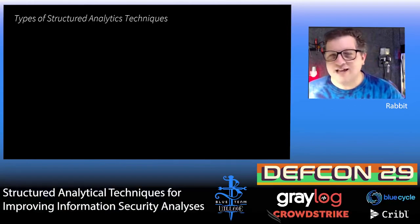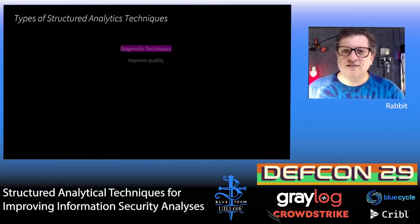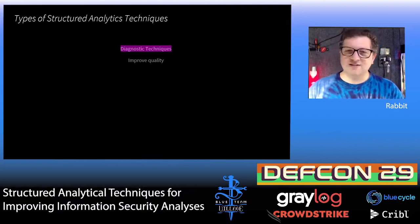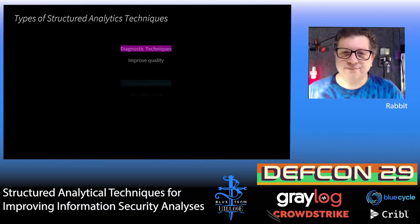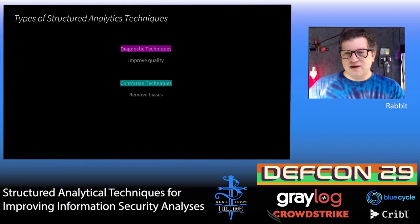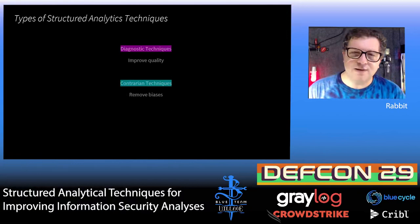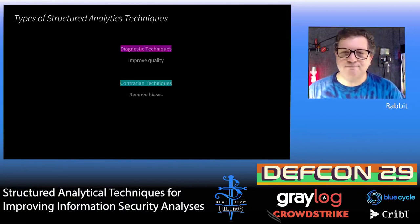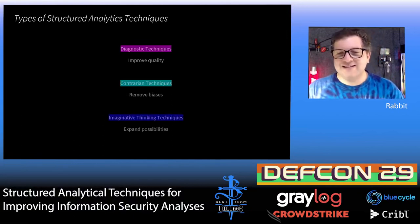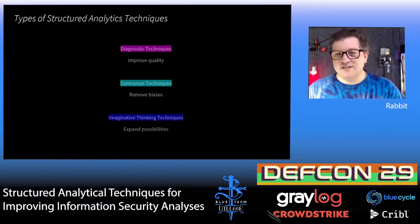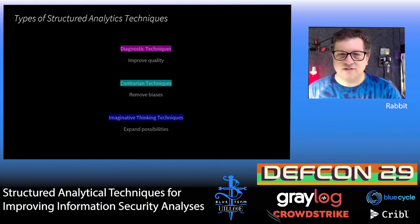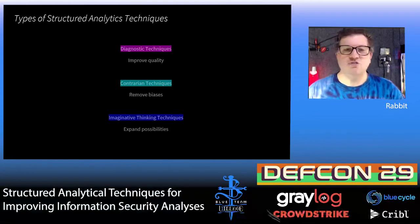So there are three types of structured analytic techniques. The first is diagnostic techniques, used to improve quality and make sure your analyses are based on quality information. The second type are contrarian techniques, for making sure analyses are not biased or based on limited thinking. And the last type is imaginative thinking techniques, for developing new insights, breaking out of the box, or seeing things from potentially new viewpoints.